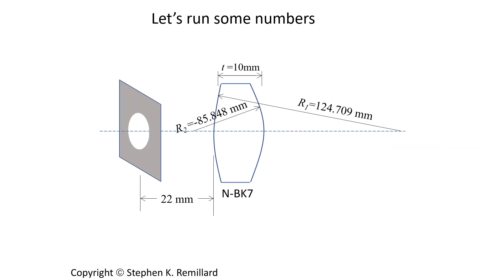Here is the lens we're going to do our testing with: a single lens with two specified radii, a thickness of 10 millimeters, made out of N-BK7 glass, and a stop that will move around. Let's go into Excel, look at how a stop is put in the Y-and-U spreadsheet, move it, and see what it does to the aberrations.